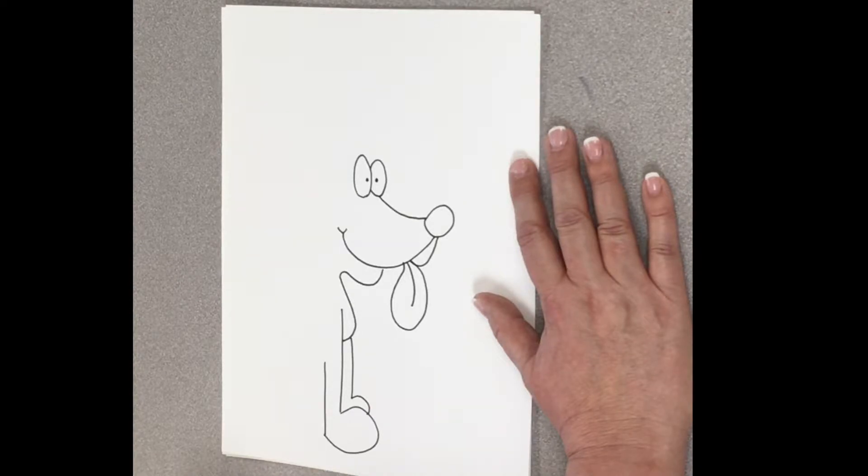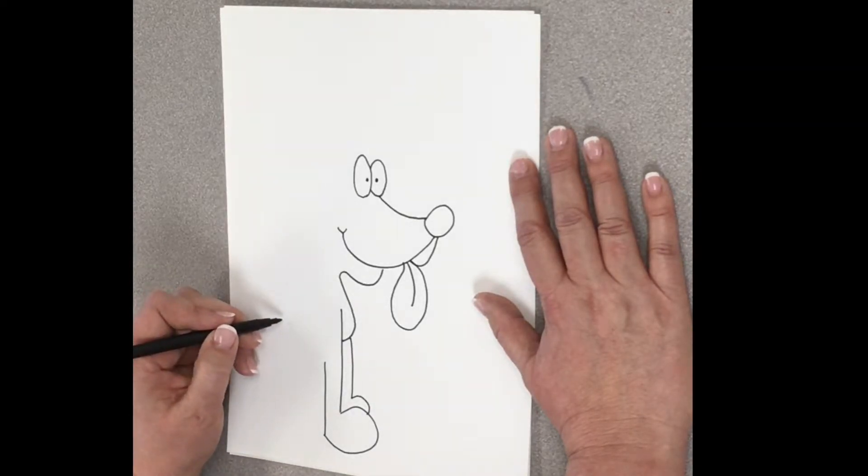Okay, and there's his back paw. All right, now this dog is sitting. So, here's how I do the leg, the back leg. I'm going to do a number two.